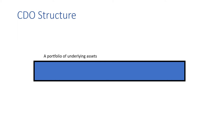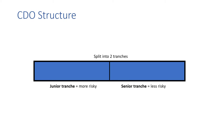This resembles a CDO structure where we have a portfolio of underlying assets, and we split this portfolio into two tranches: a junior tranche, which is intended to be more risky, and a senior tranche, which is intended to be less risky.